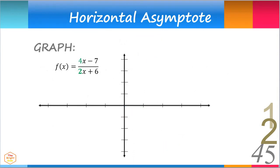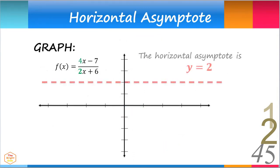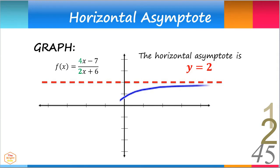Here, the horizontal asymptote is y equals 2. The curve runs closer and closer to the horizontal line y equals 2 but will never intersect nor touch it.